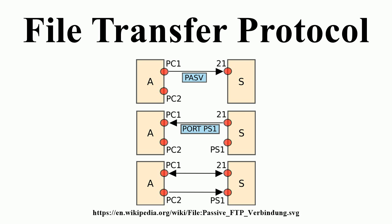The server responds over the control connection with three-digit status codes in ASCII with an optional text message. For example, 200 means that the last command was successful. The numbers represent the code for the response and the optional text represents a human-readable explanation or request. An ongoing transfer of file data over the data connection can be aborted using an interrupt message sent over the control connection.